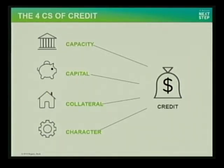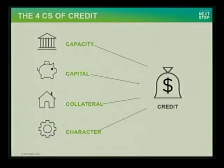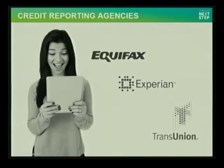The last of the four C's is character, and I think this is one of the most important elements. Character is really going to be defined by what is on your credit report. Why do we study history? Because history has a tendency to repeat itself — we learn from our mistakes and from lessons. Your credit report is essentially your history, and that's what a lender will look at: what have you done in the past.